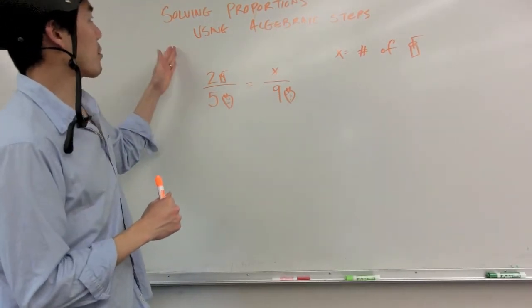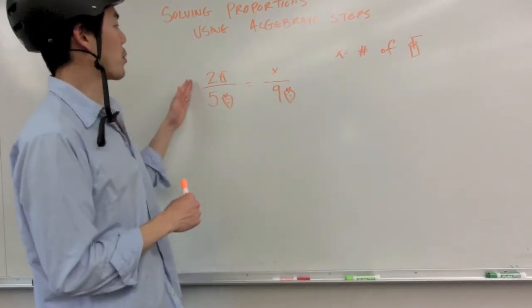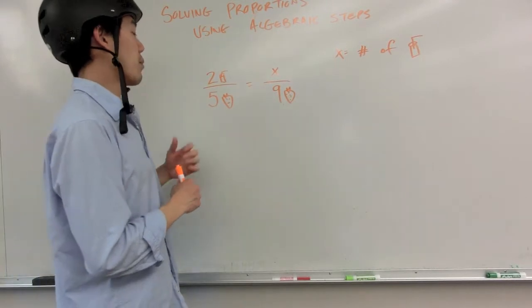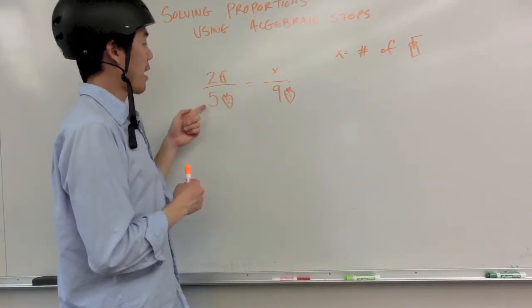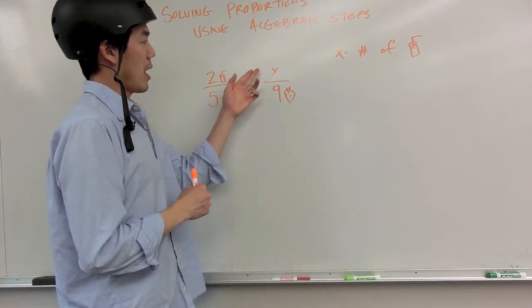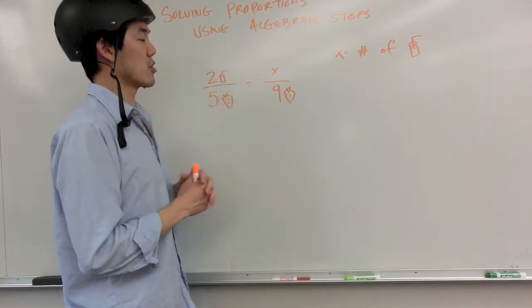We are going to be solving proportions using algebraic steps and we have a proportion right here that we've looked at before. Two smoothies have five strawberries in it, so how many smoothies would have nine strawberries?